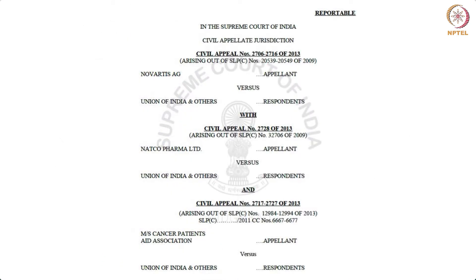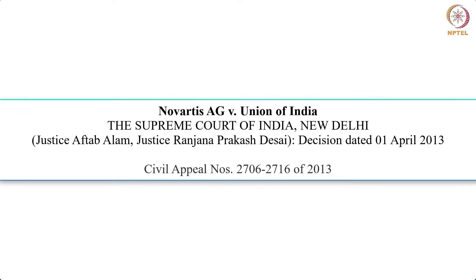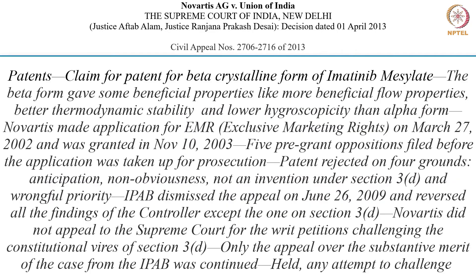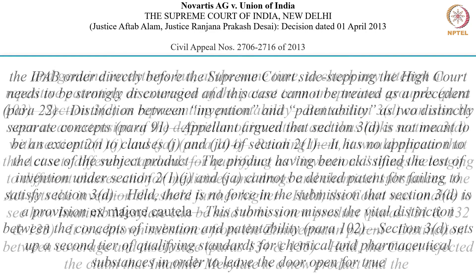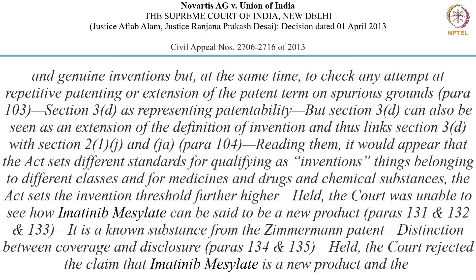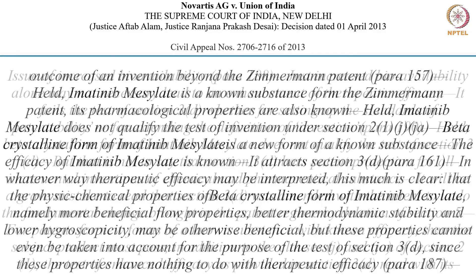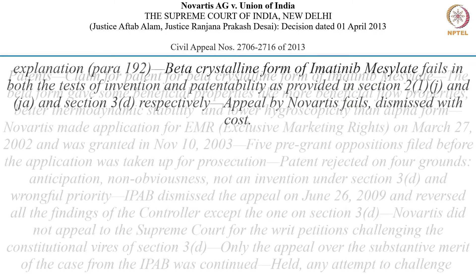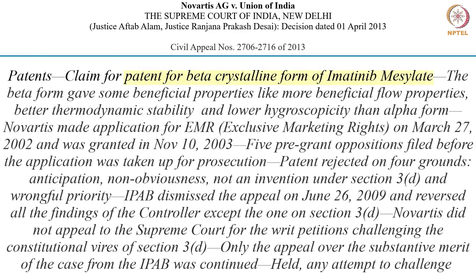The Novartis case also has a history. If you want something quicker and do not have the time to read the 112-page judgment, you would go where we have summarized the entire case for you in a few sentences. This case pertained to a patent over the beta crystalline form of imatinib mesylate.